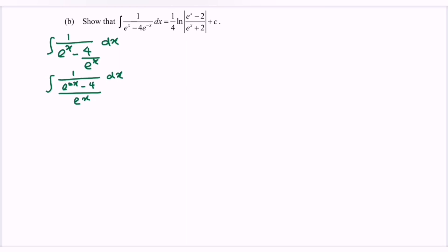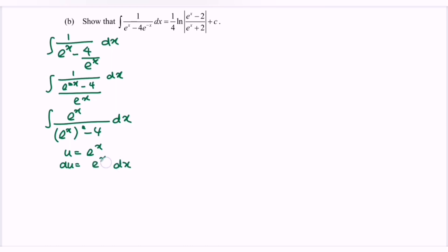We rewrite the situation as the integral of e^x over (e^x)² minus 4 with respect to x. From here we notice a substitution: let u equal e^x. If we differentiate, we have du/dx equal to e^x, so e^x dx equals du. Substituting, we have the integral of 1 over u² minus 4 du. My suggestion is to use partial fractions.